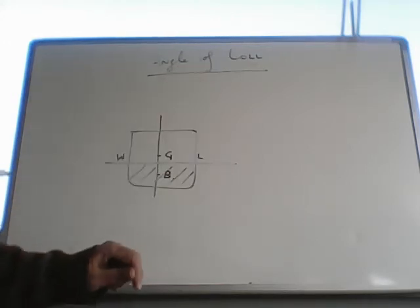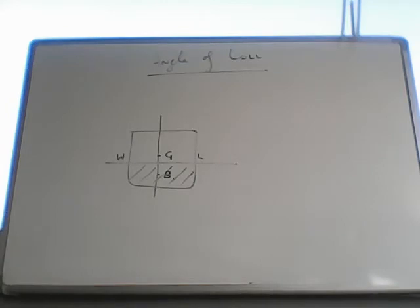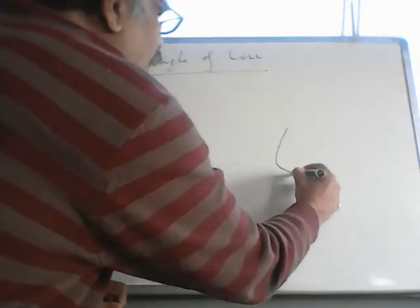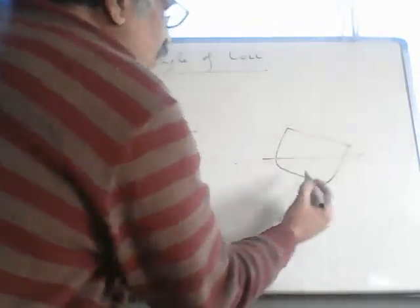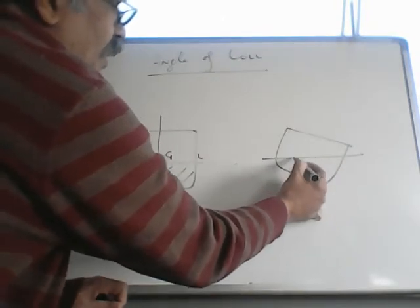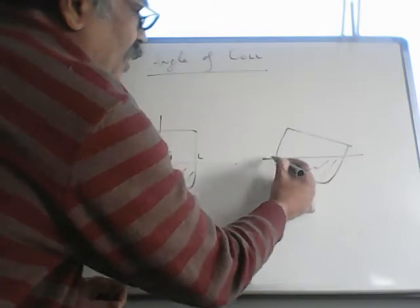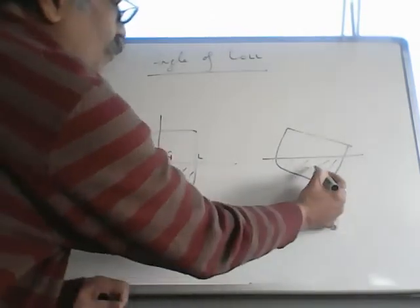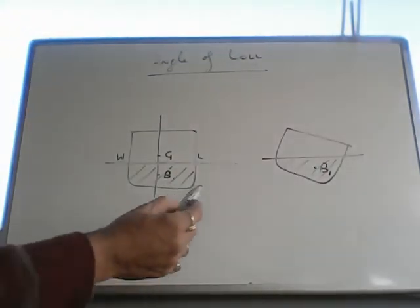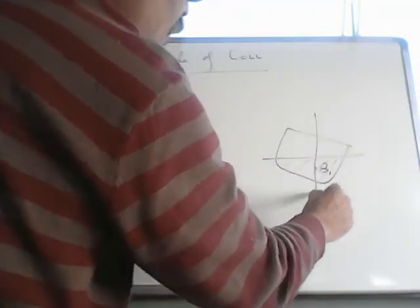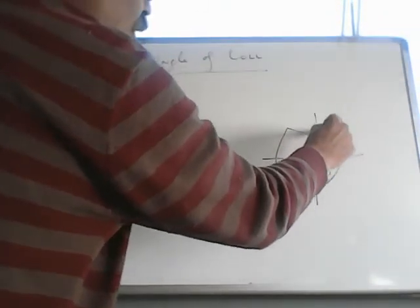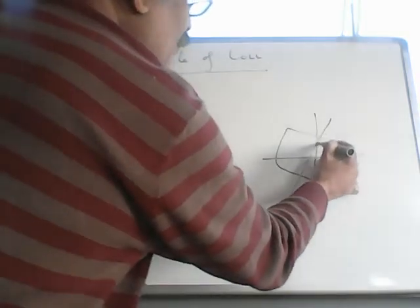Now when this ship goes to sea and you experience moderate weather, she starts rolling. Then the shape of the underwater volume changes. The center of gravity of the underwater volume shifts from B to somewhere here, B1. If I draw a vertical line passing through B1, wherever this vertical line cuts the original vertical line, that is known as Metacenter.